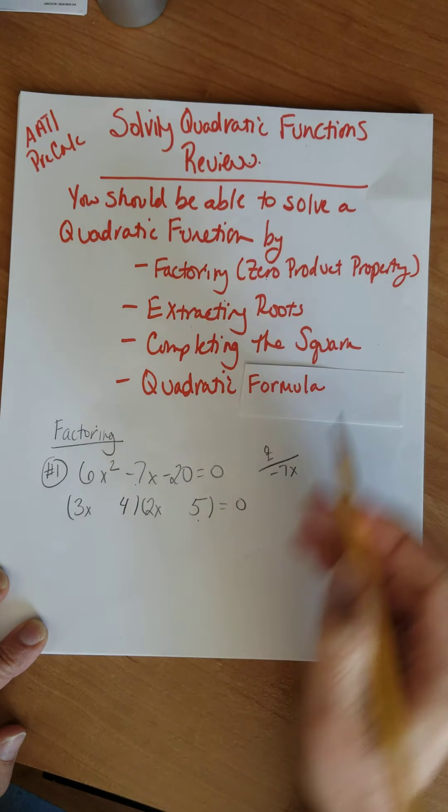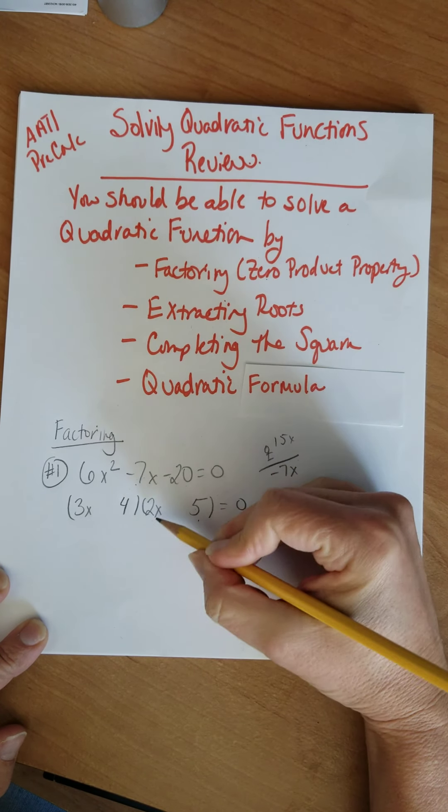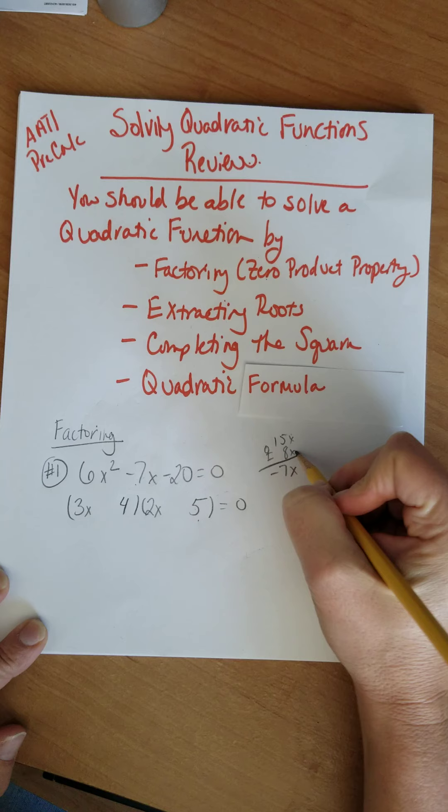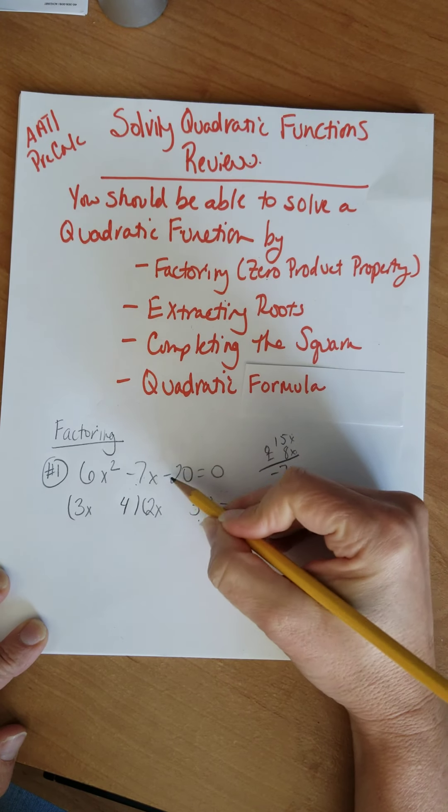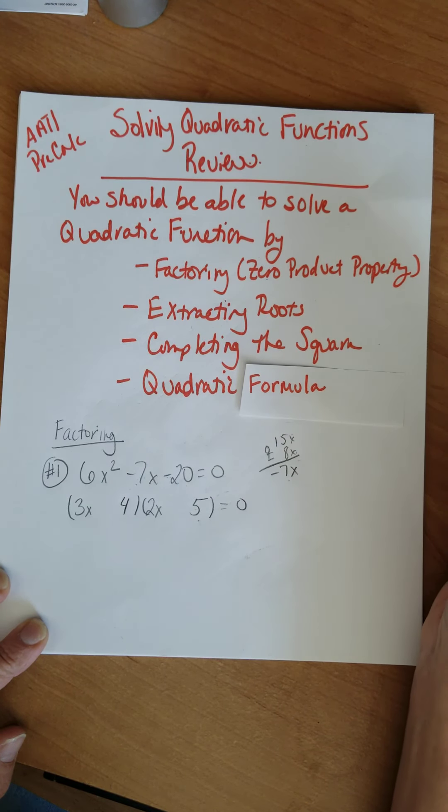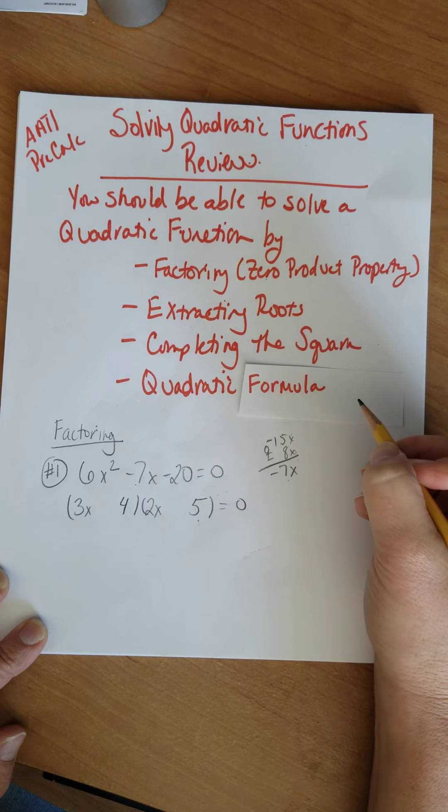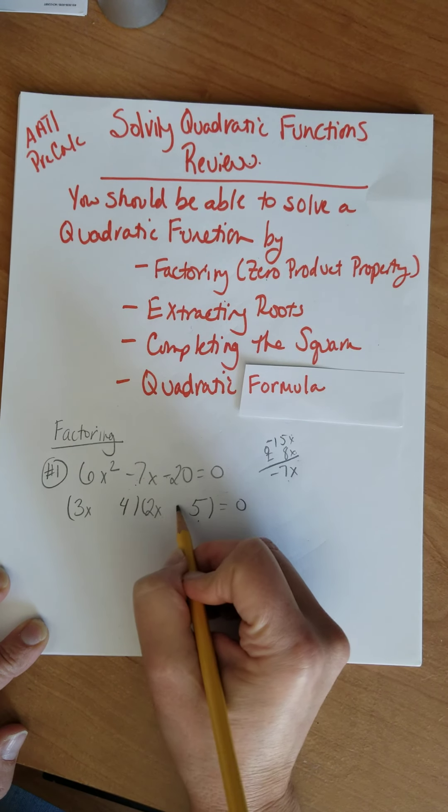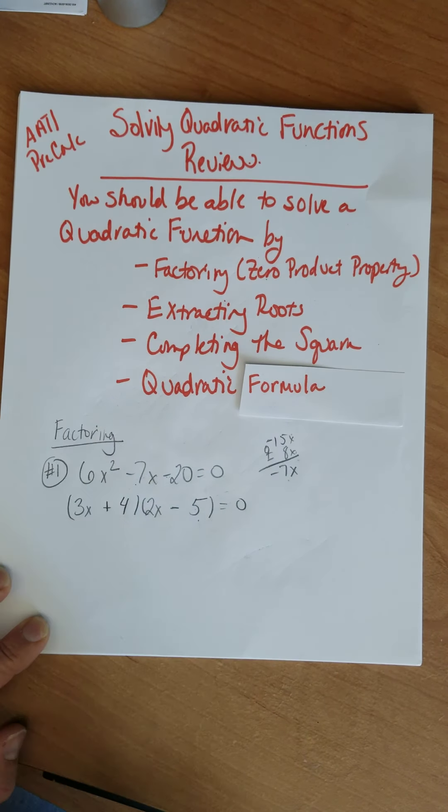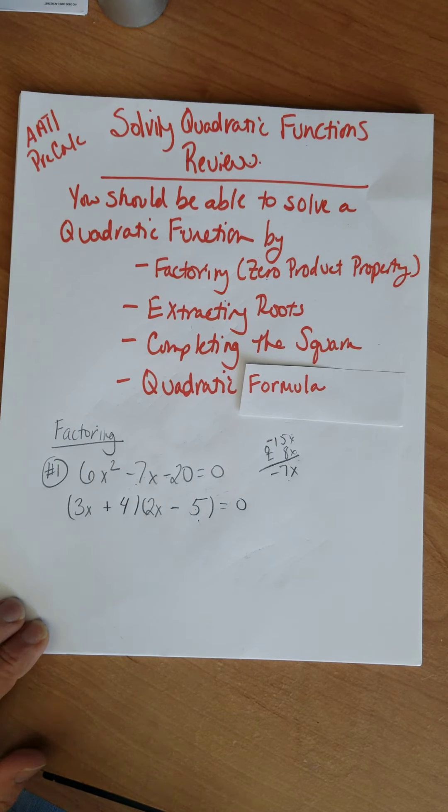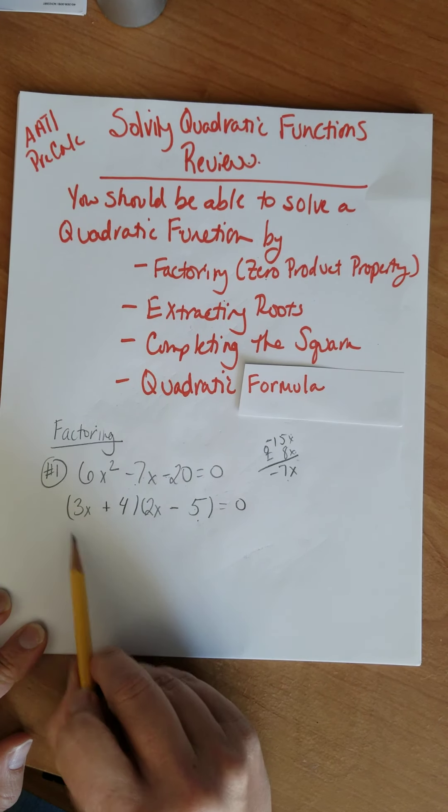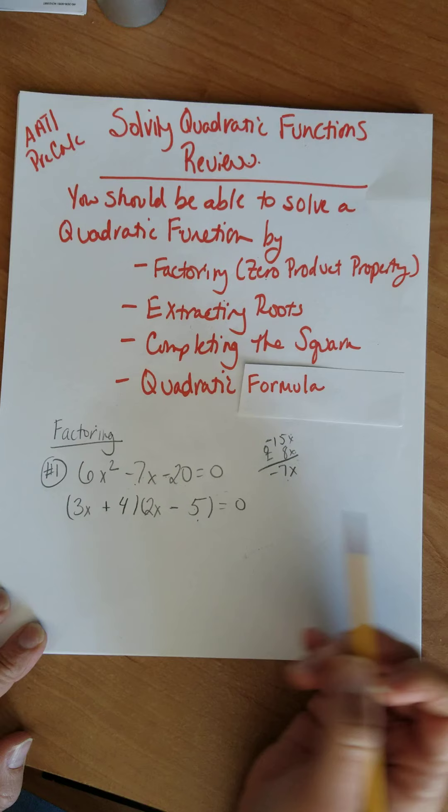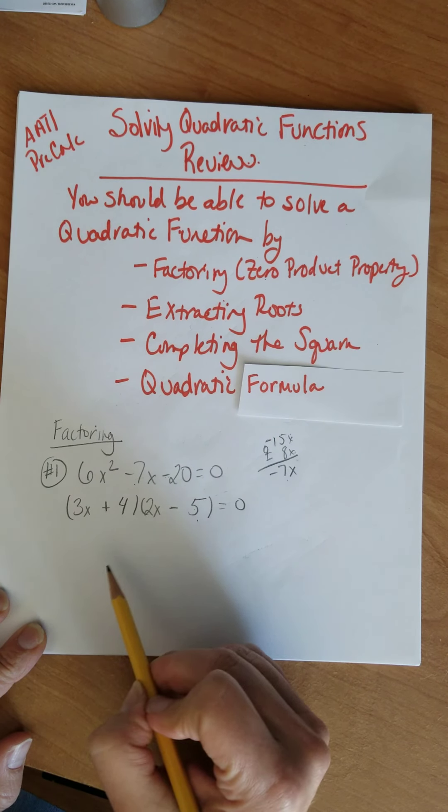On the outside, I have a 15x and on the inside, I have an 8x. Can a 15x and an 8x be a negative 7x with different signs? Yes, it can. If I make it negative 15, I'm good. So negative 15 would make this negative 5 and that would be plus 4, right? So on the outside, I have that negative 15. On the inside, I have the 8. I'm good to go.